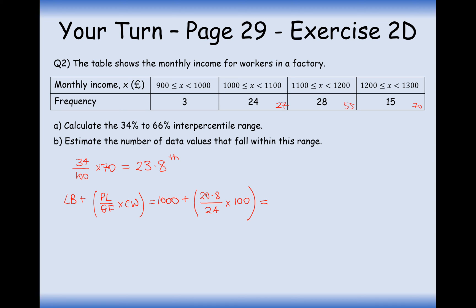Add the place in the group. We've already had three data values up until here. So the place in this group is going to be the 20.8 data value out of 24 times by the class width here, which is 100. And type this into your calculator. 20.8 divided by 24 times by 100. Add on 1,000. And you get 1,086.6 recurring. So we'll write 0.7.